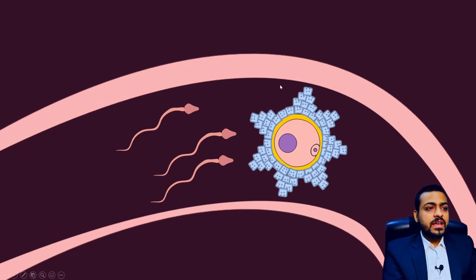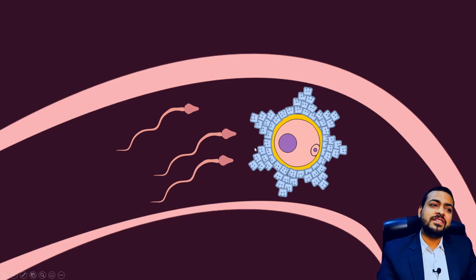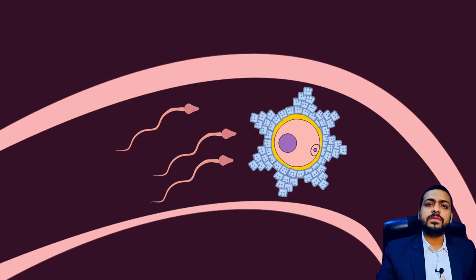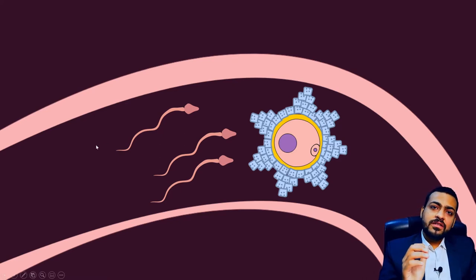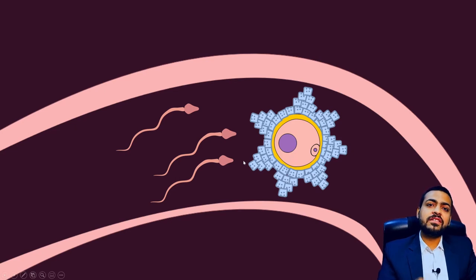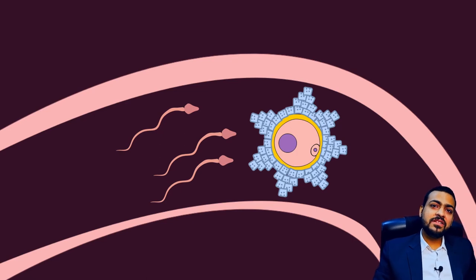How many sperms are able to reach the vicinity of this secondary oocyte? About 100 to 200 to 600. So, just imagine: 200 to 600 million sperms were released, and out of those millions only 200 to 600 were able to reach near the vicinity. Later we will discuss that only a single sperm will fertilize the secondary oocyte. Life is full of competition, and this competition starts even before you are born.